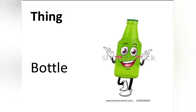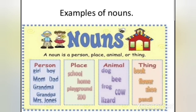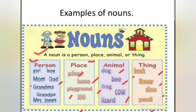Here are some examples of nouns. A noun is a person, place, animal, or thing. Look at the person section: girl, boy, mom, dad, grandma, grandpa, Mrs. Johns. For place: school, home, playground, zoo — these are all nouns. For animal: dog, bee, frog, cow, lizard — these are also nouns. And in the thing section: books, flower, shoes, pencils — so these are all nouns.